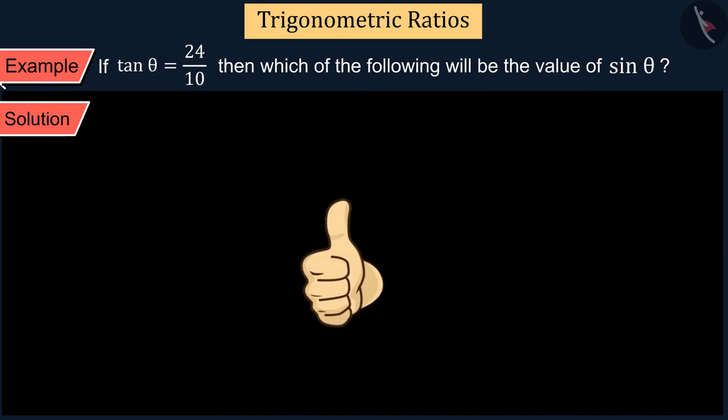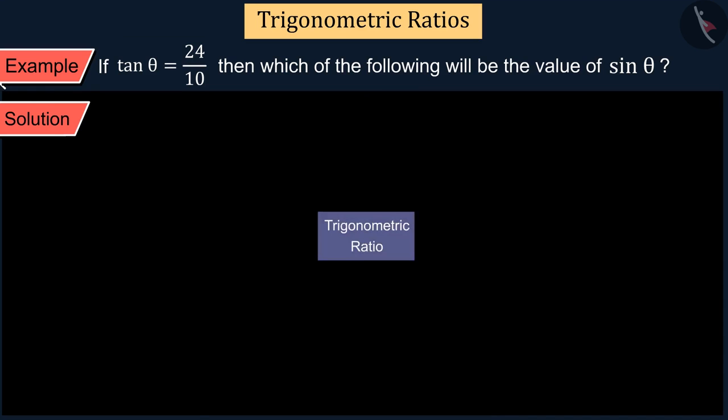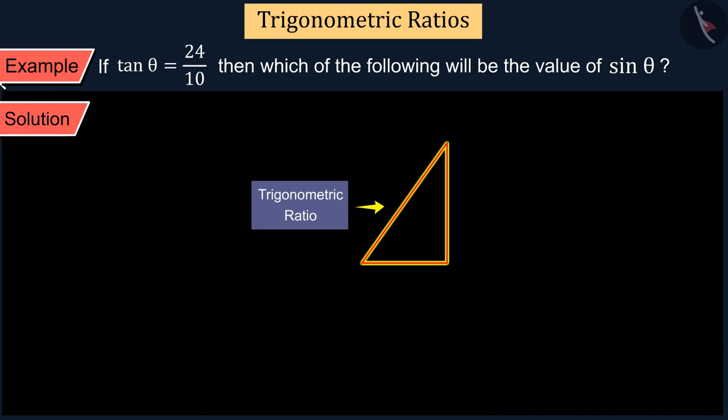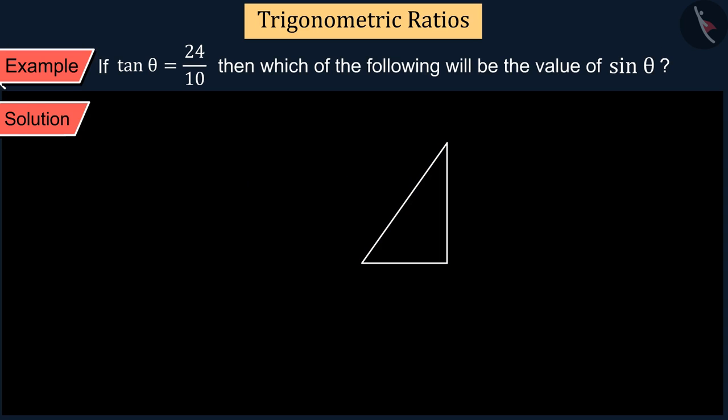Perfect! We know that trigonometric ratios represent the ratios of two sides of a right angle triangle. So first, we draw a right angle triangle called PQR,